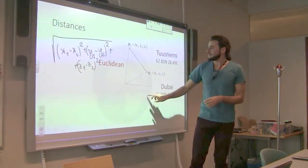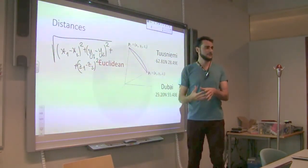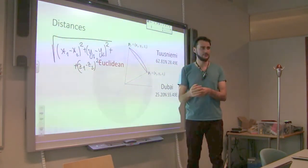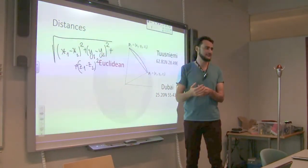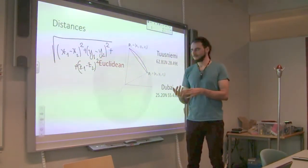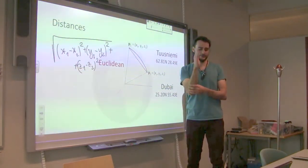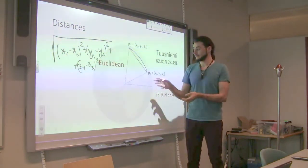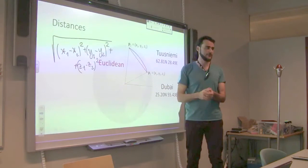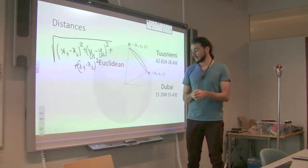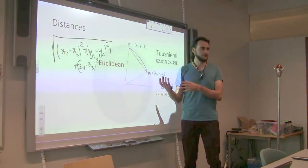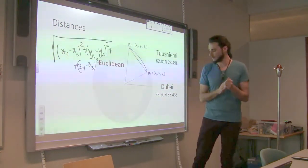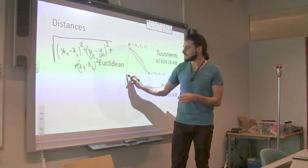More useful is the distance on top of the Earth — a curve on the surface, basically how the bird flies while maintaining a fixed altitude. The question is how to get this value if we know the Euclidean distance. The trick is to find the central angle alpha between the two points.